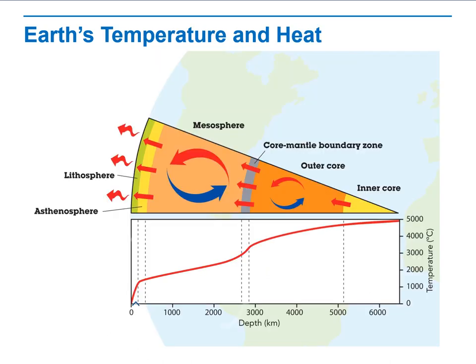Here we can see how heat travels from the inner core through each of the layers. The question is: where does the heat in the inner core come from? Half of the heat comes from adiabatic compression, which means increasing in pressure equals increasing in temperature. The other half comes from radioactive decay of long-lived isotopes such as uranium, thorium, and potassium.